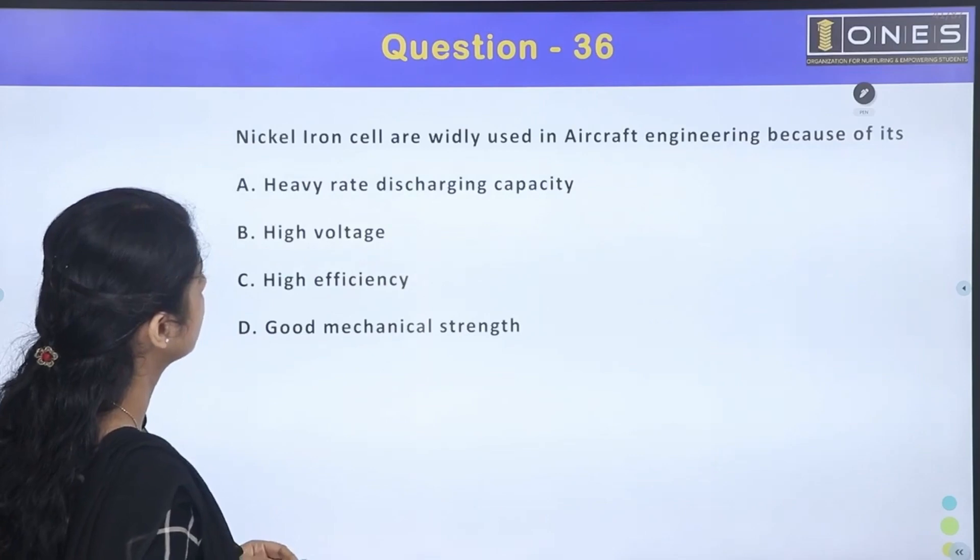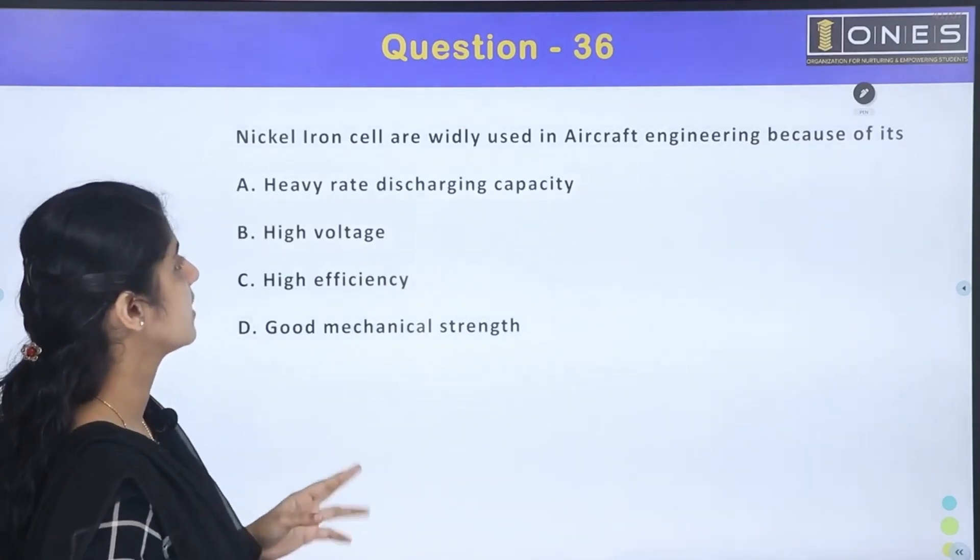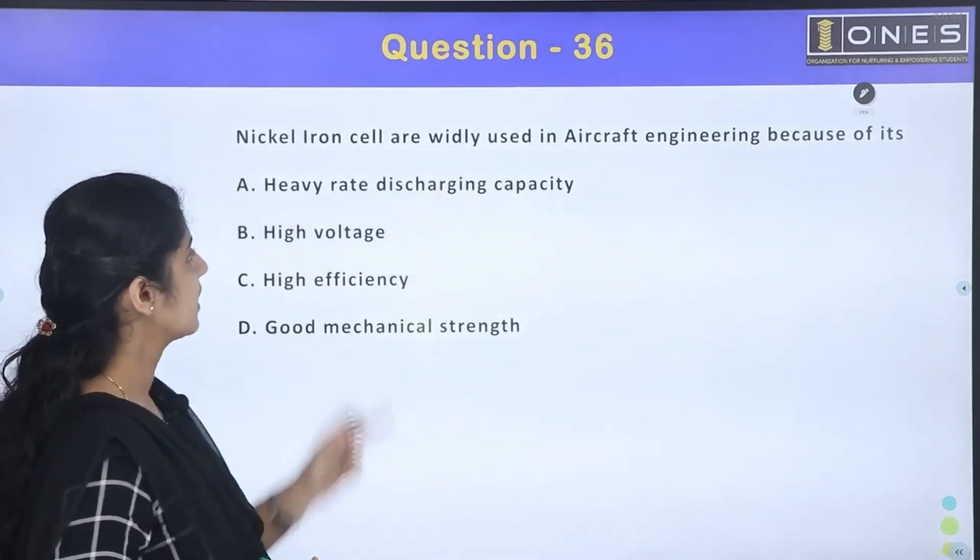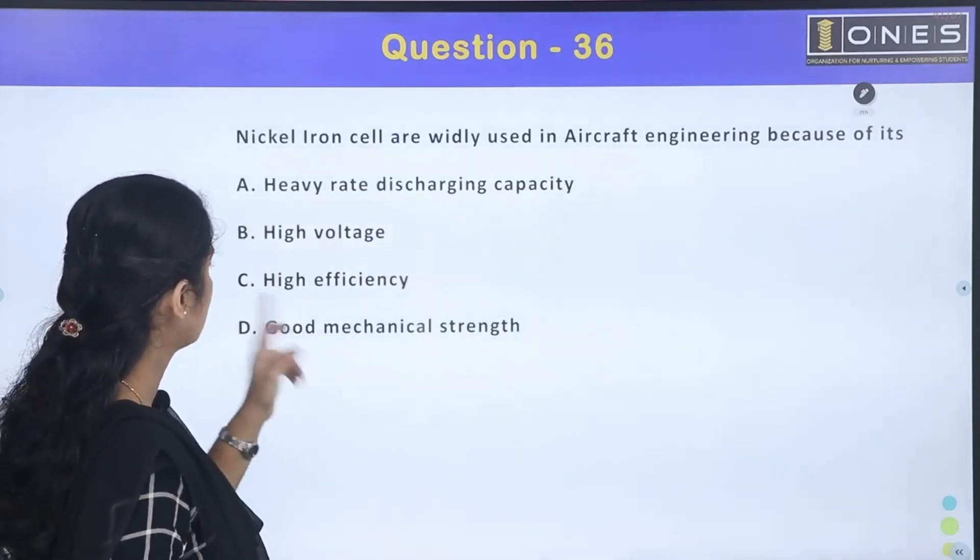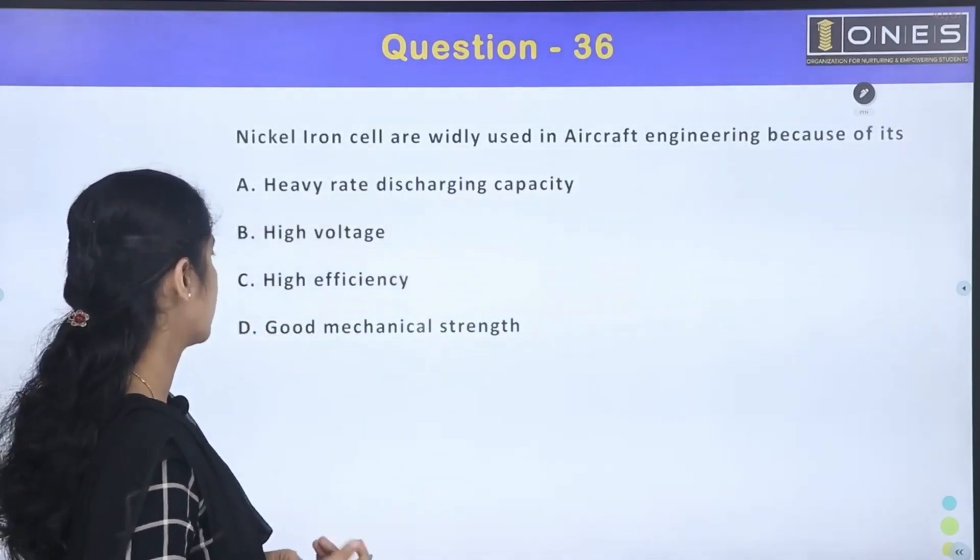Nickel Iron Cell is widely used in aircraft engineering because of its heavy rate discharging capacity, high voltage, high efficiency, and good mechanical strength.